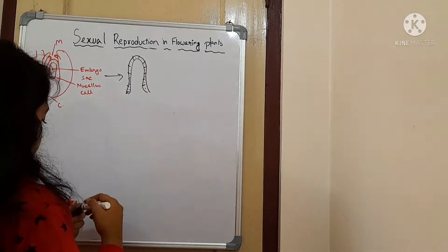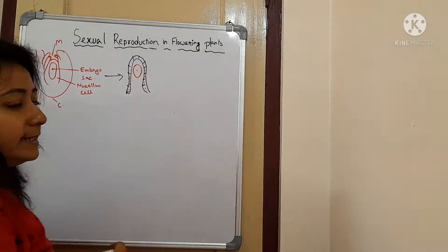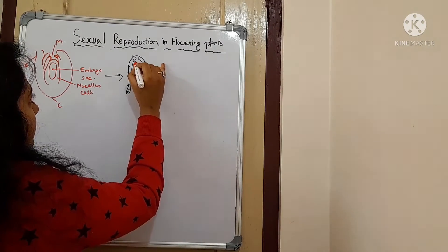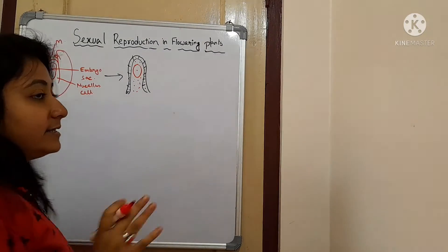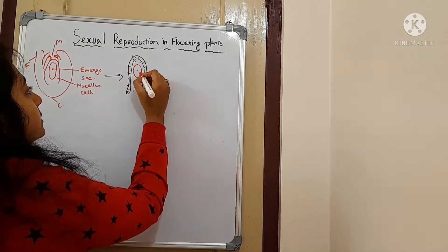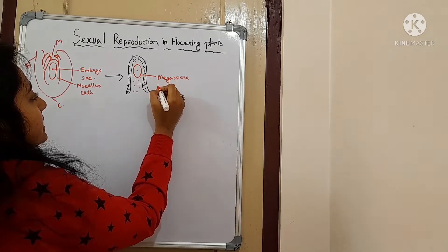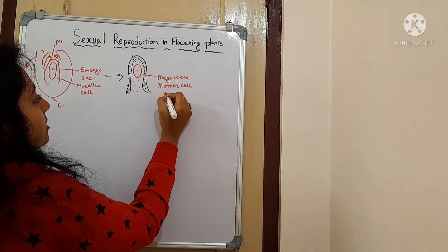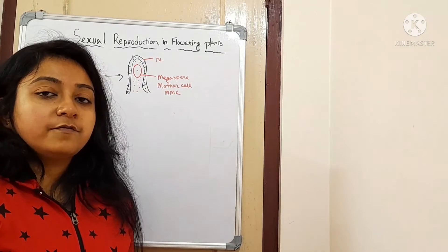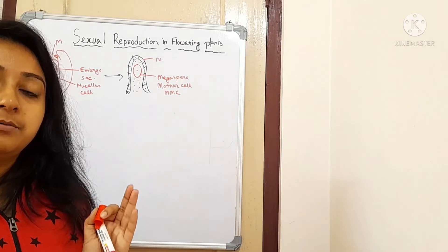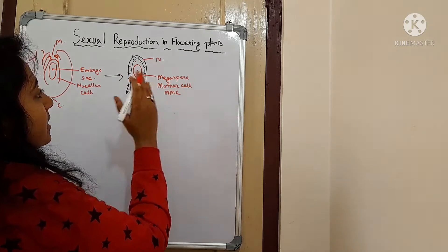Inside the nucellus cells, one cell is present which is very big, and the rest of the cells are very small. This one big cell has a very dense amount of cytoplasm in it, and that cell is considered as the megaspore mother cell, or MMC. Outside this there is the nucellus, so it can draw nutrition from the nucellus, because the nucellus is full of various kinds of nutrients.